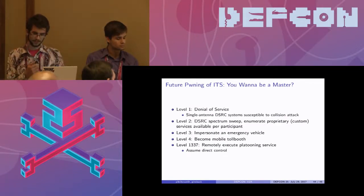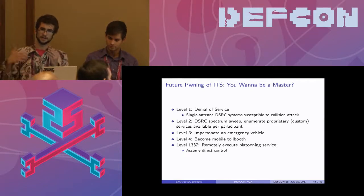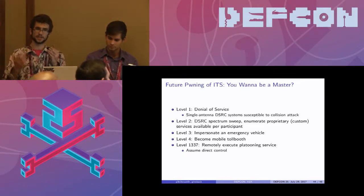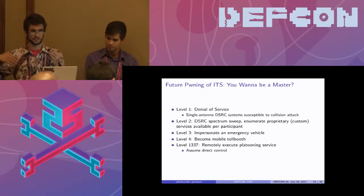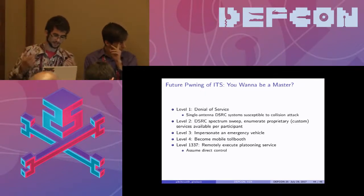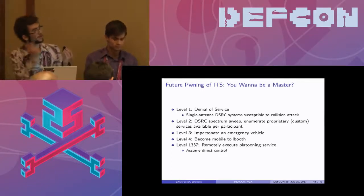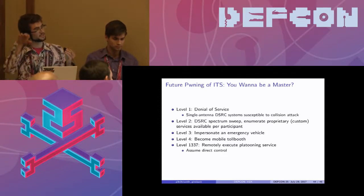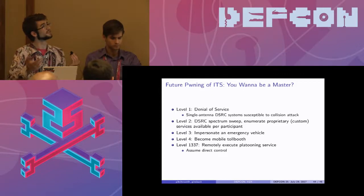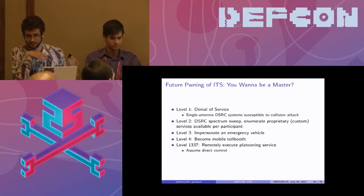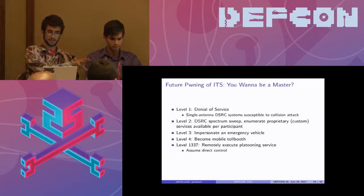What can you do with this? We have described a means to transmit and inject into the WAVE spectrum — the intelligent transportation channels — to interface with the VANET. So you want to be a master? See if you can pwn these. These are five levels of increasing complexity. You can perform denial of service, including on the PKI infrastructure — for example on single-antenna systems, you can cause a collision attack by transmitting out of sync with the rest of the nearby network.